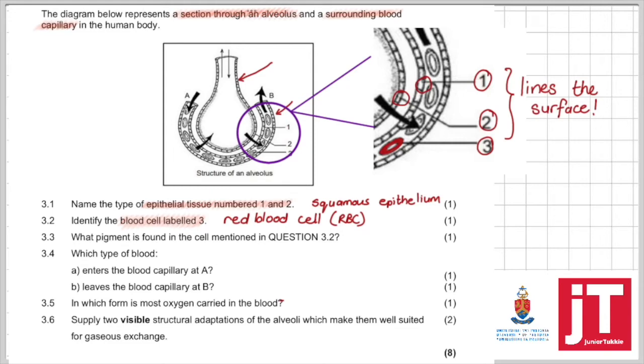Question 3.3, what pigment is found in the cell mentioned in 3.2? It's the red blood cell so here we can identify or link that to hemoglobin, the pigment that's been referred to there.